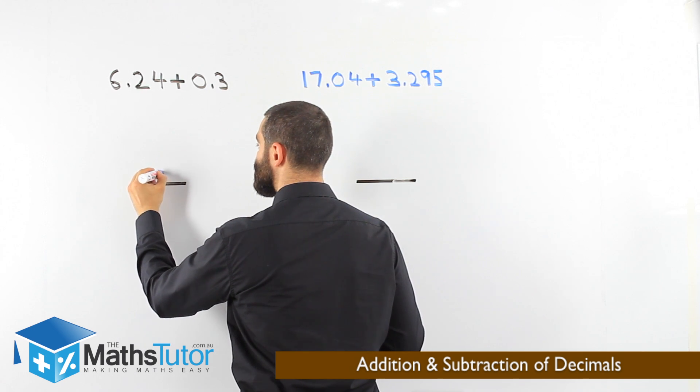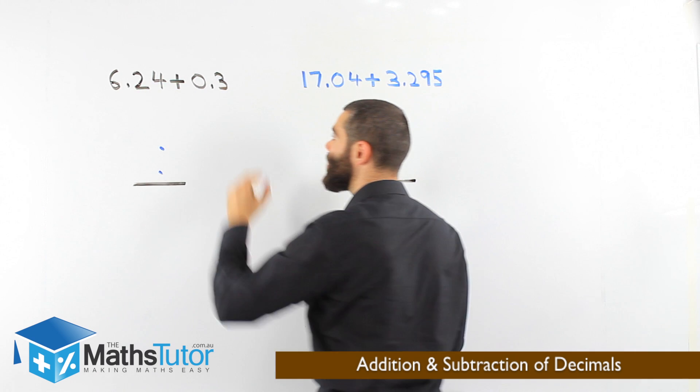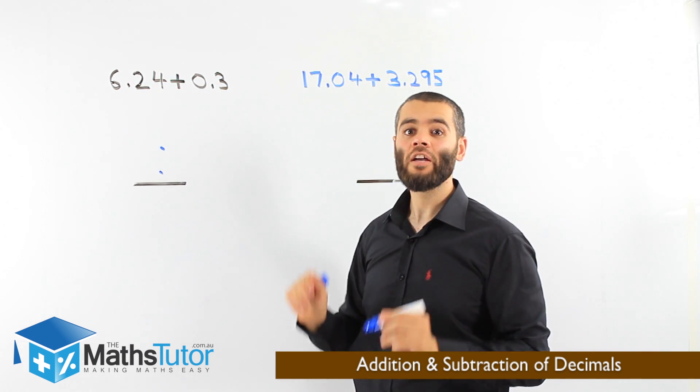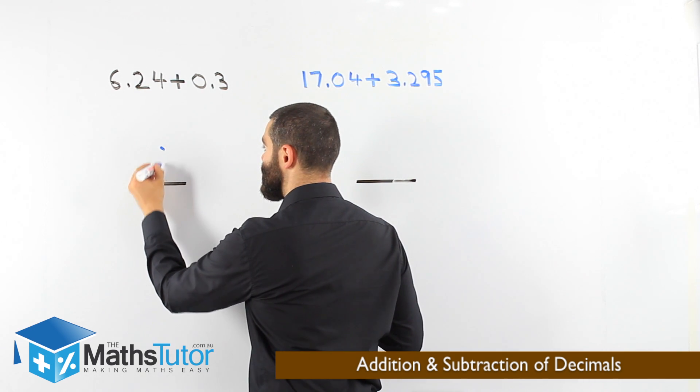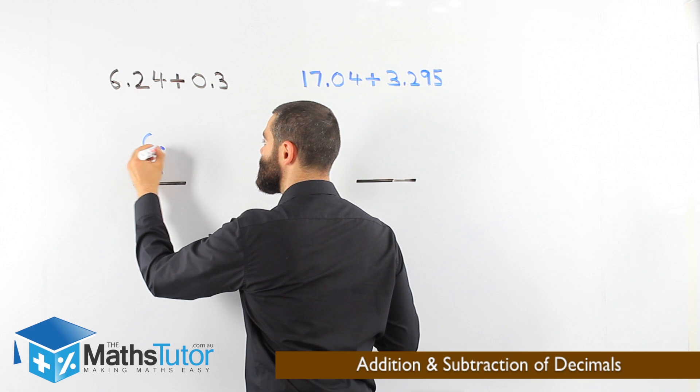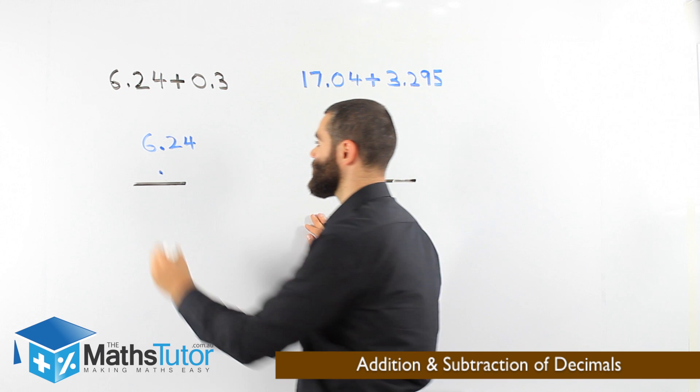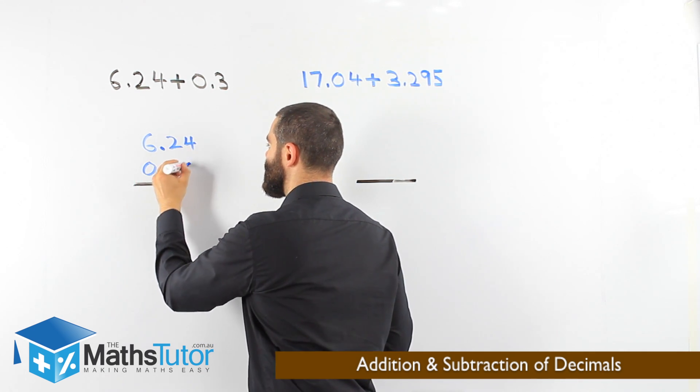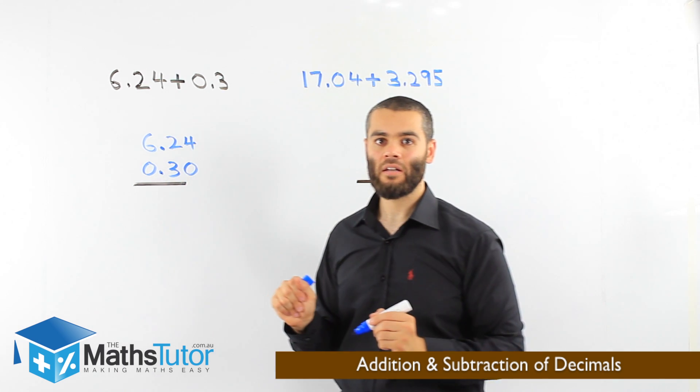First of all, we align the points. 6.24 plus 0.3. We have three numbers here, we have two numbers here. If we don't align them up, we're going to make a mistake. We align the points. 6.24. Then, 0.3. And we put a 0 to make it easier when we're adding up.